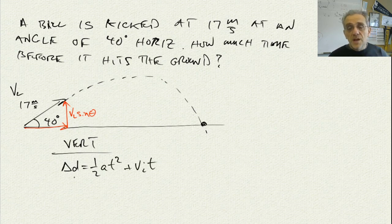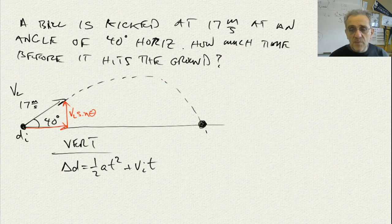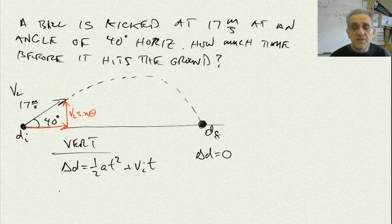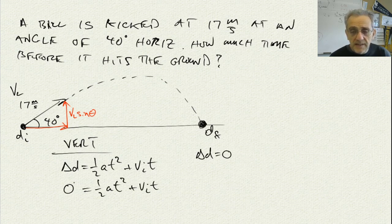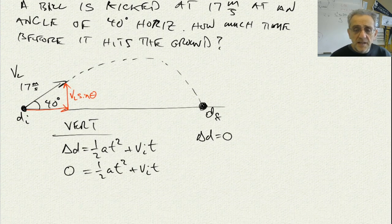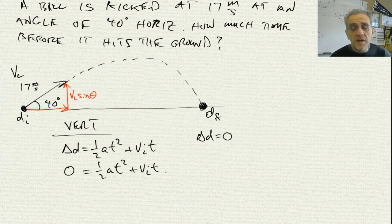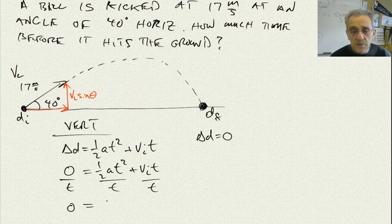Now, notice that this is DI. That's the original position. And this point here is DF. And notice they're at the same height. Therefore, we know that delta D vertically must equal 0. So, now I can put a 0 in for delta D. And I'm going to solve for T. But what's really nice about this is that because it's a 0 here, I can avoid the quadratic formula simply by dividing by T. So, if I divide this by T, divide this by T, and divide this by T, I'll get 0 equals 1 half AT plus VI.